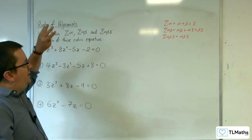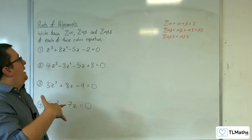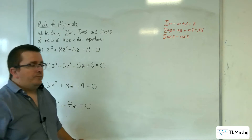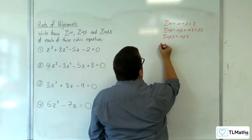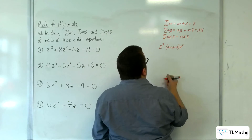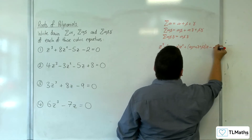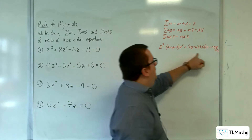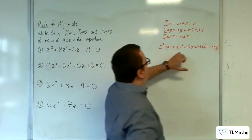This question is looking for those three bits of information for these four examples. If you think about having your general cubic — az cubed plus bz squared, etc. — divide through by a, and you can write your cubic equation as z cubed, take away (alpha plus beta plus gamma) z squared, plus (alpha beta plus alpha gamma plus beta gamma) z, take away alpha beta gamma equals zero. Remember, they go negative, positive, negative.